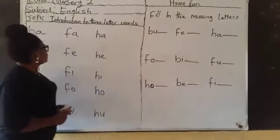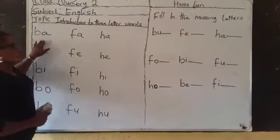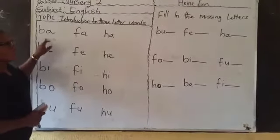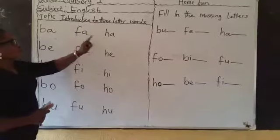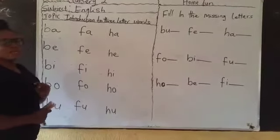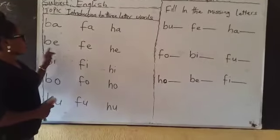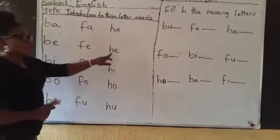Now look at the word. I know in our last lesson we have done ba. We have done fa. Ha. Now let's go to e. Ba. Fe. He.